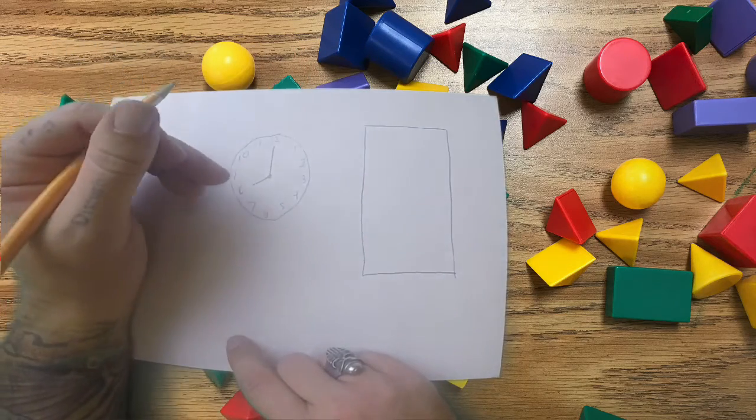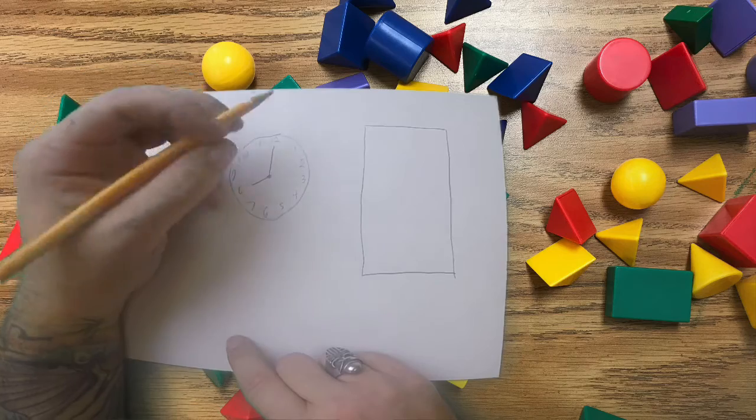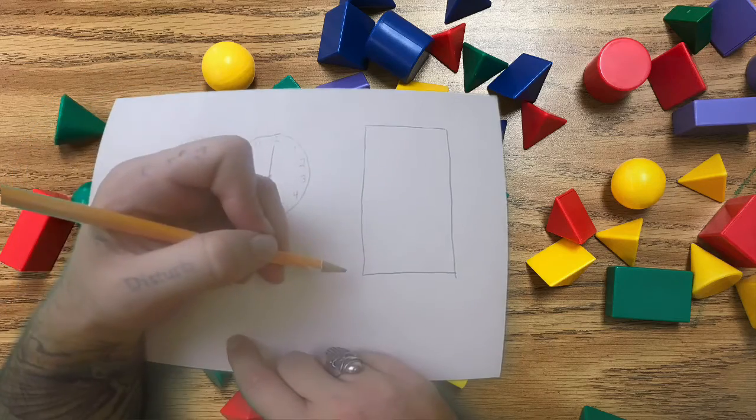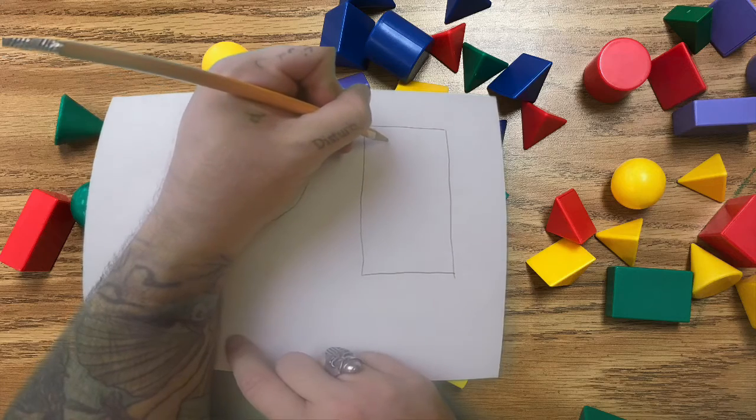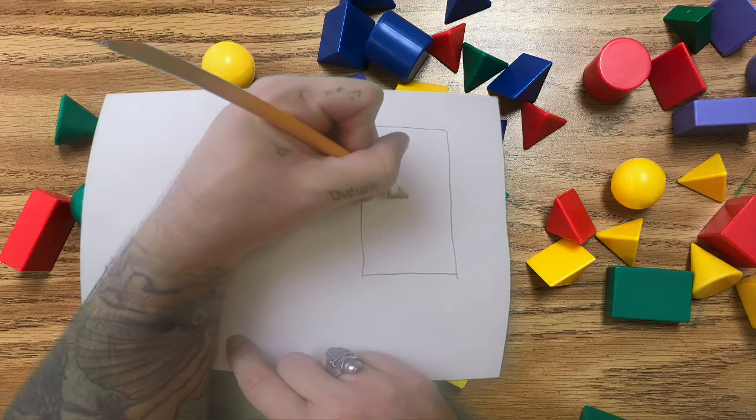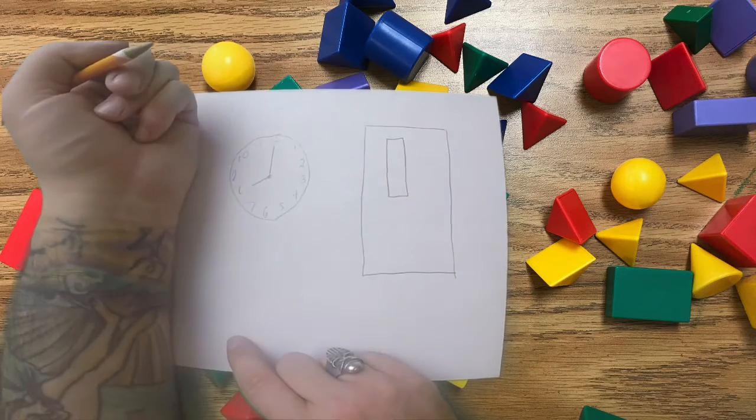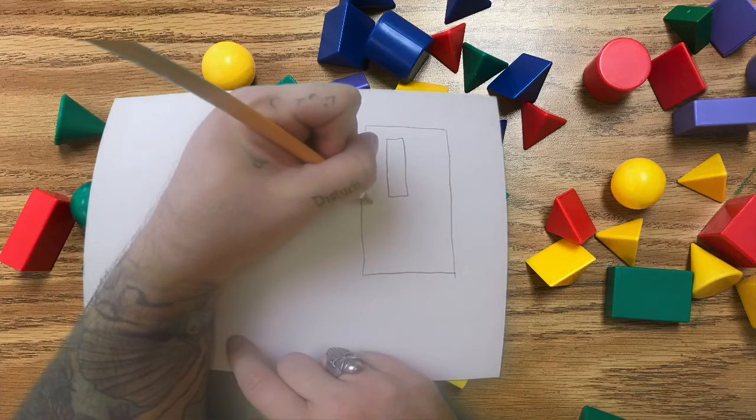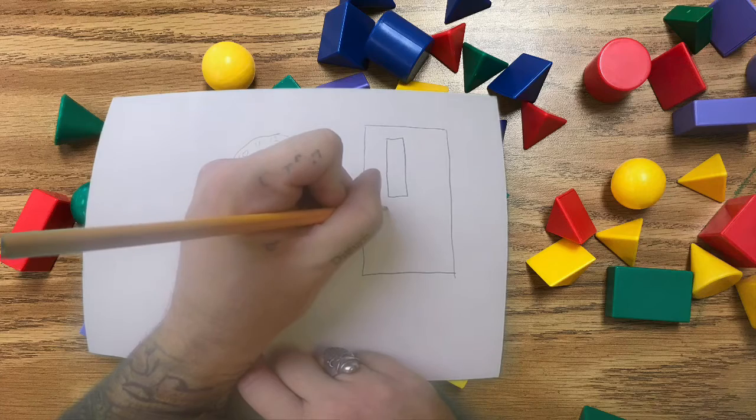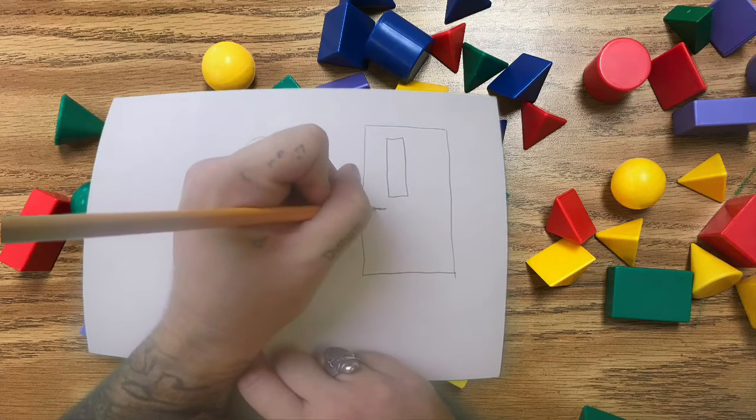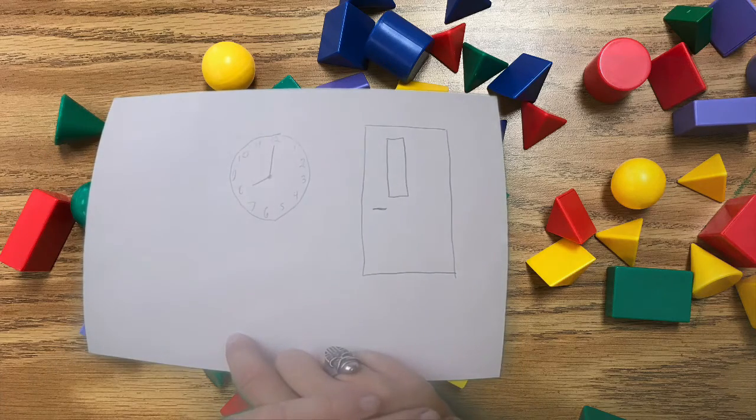What I'm going to draw for my rectangle is I'm going to draw a door. So with my door, I actually have two rectangles on my door, because I have the rectangle that makes the shape of the door, and I have a smaller rectangle that makes the window in my door. And then I have a door knob, which is a line, kind of like another rectangle. So then I've got a door.